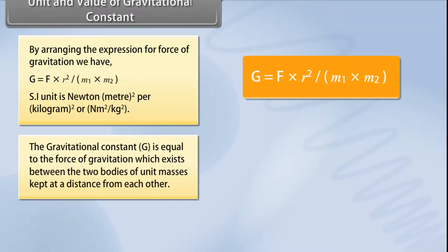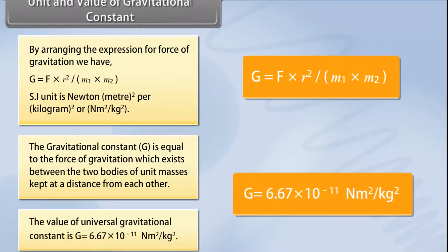The gravitational constant G is equal to the force of gravitation which exists between two bodies of unit masses kept at a distance from each other. The value of universal gravitational constant is G equals 6.67 times 10 to the power minus 11 Newton meter squared per kilogram squared.